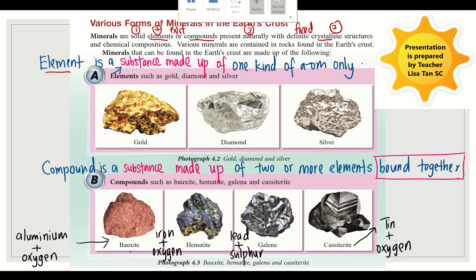So what is element? Element is a substance made up of one kind of atoms only. Example of minerals that exist in the form of elements are gold, diamond, silver. Gold made up of gold atom only. Diamond made up of diamond atoms only.